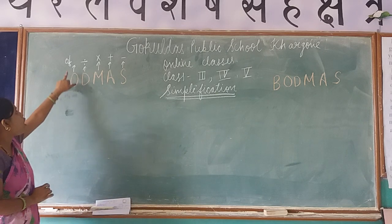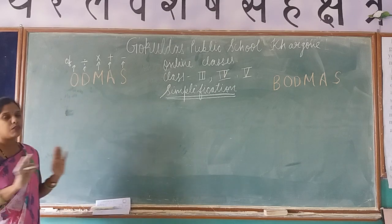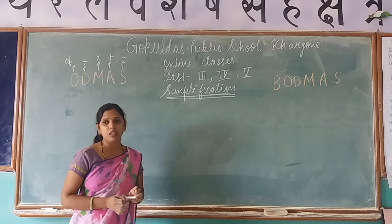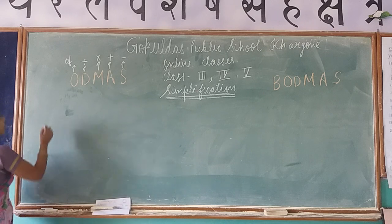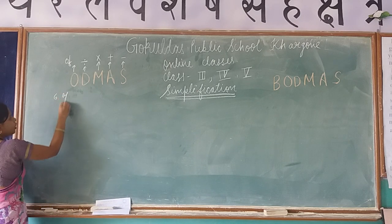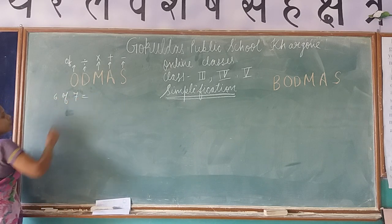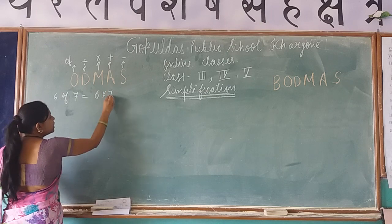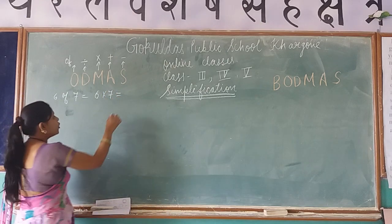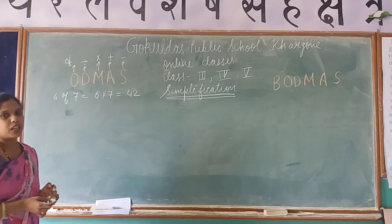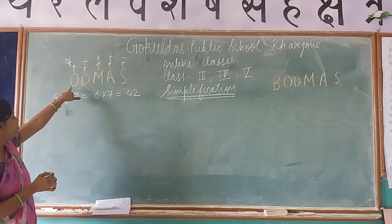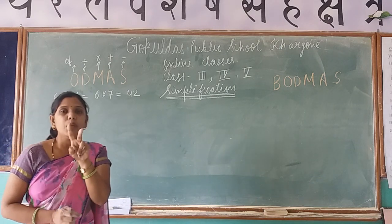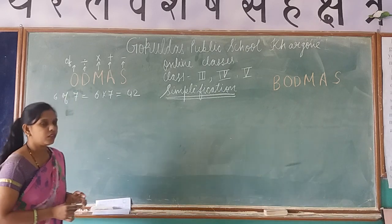When this type of question comes, first we perform the 'Of' operation. You may not have heard about the 'Of' operation before. The meaning of 'Of' is multiplication. For example, 6 of 7 means 6 multiplied by 7, which equals 42. So in a simplification question, when 'of' appears, you must multiply the two numbers between which 'of' is written.